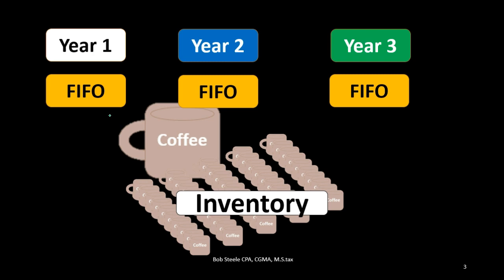Therefore, if we were to switch back and forth between flow assumptions like these, we could manipulate net income in some ways for whatever purpose we would like. Companies may have an incentive to increase net income to look better on the financial statements, or sometimes decrease net income to look worse — possibly for lowering tax purposes.